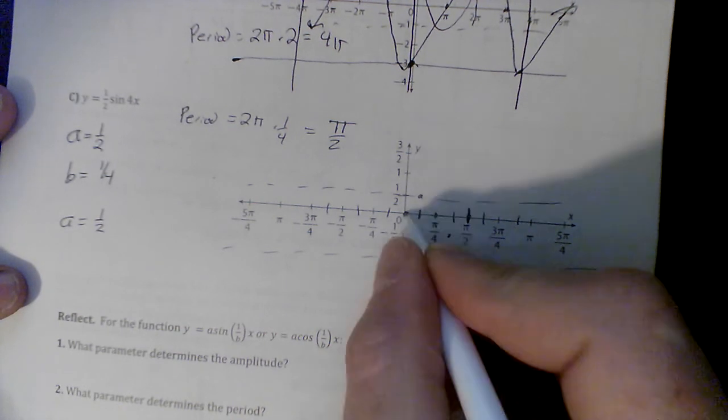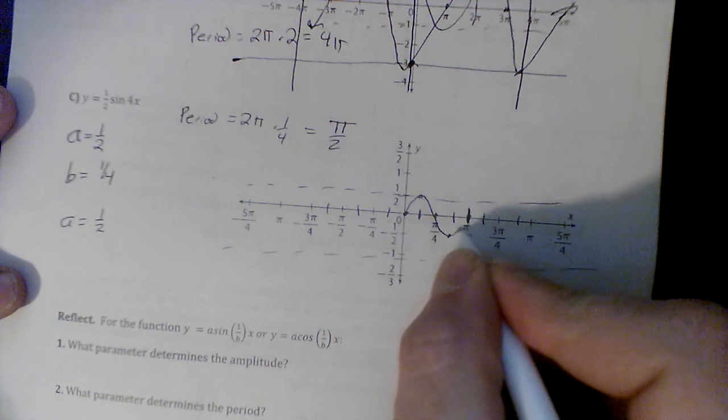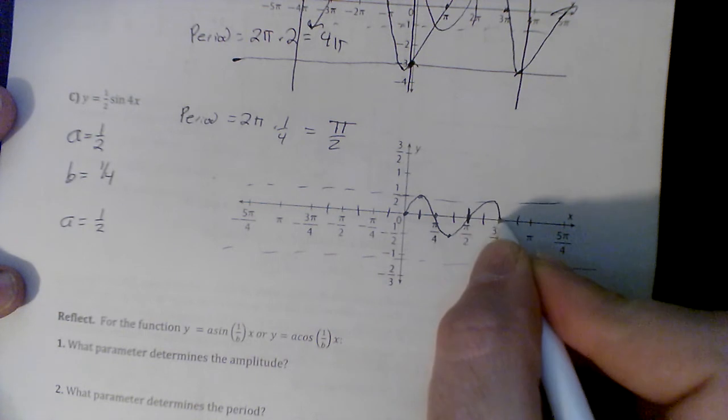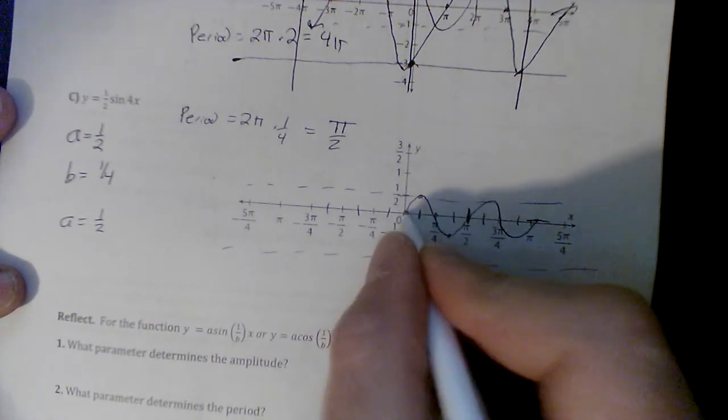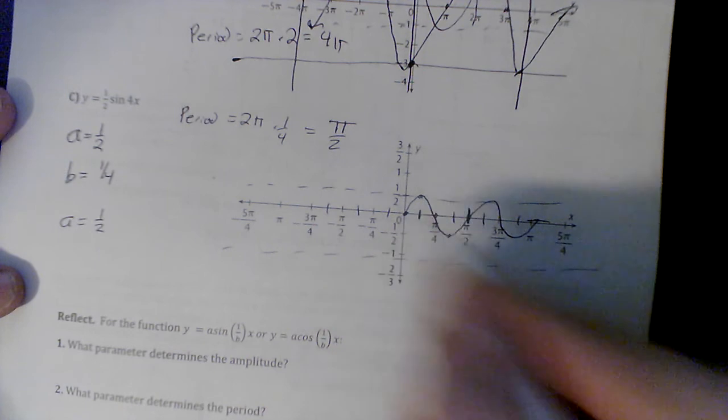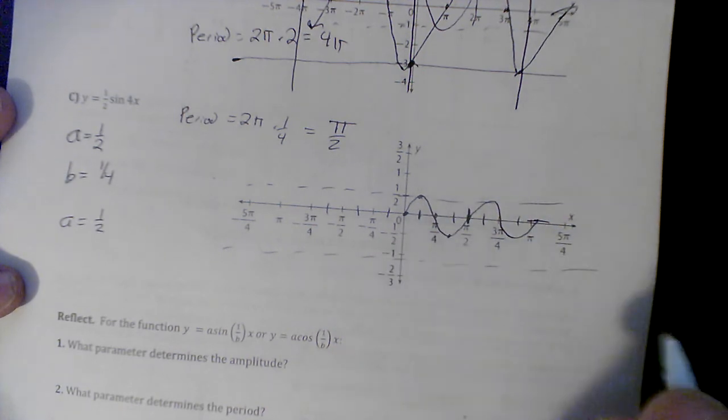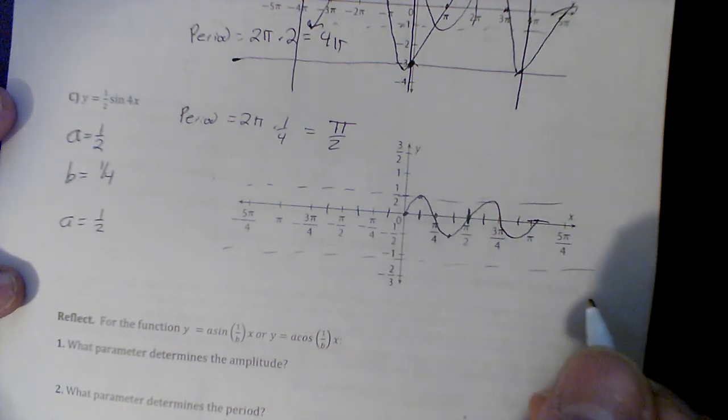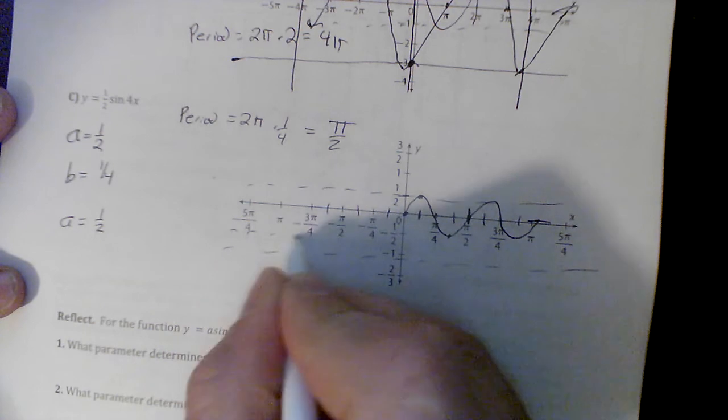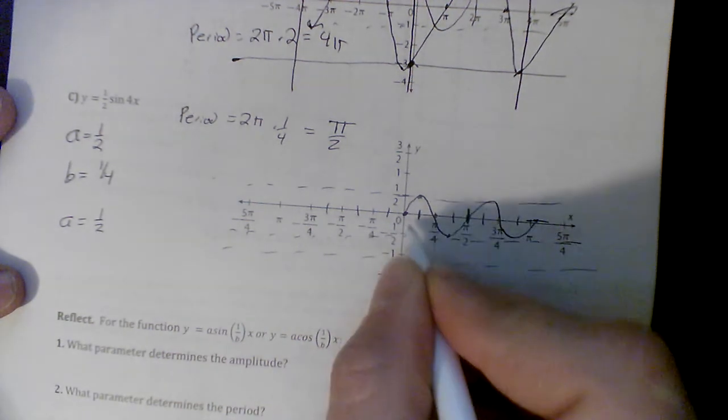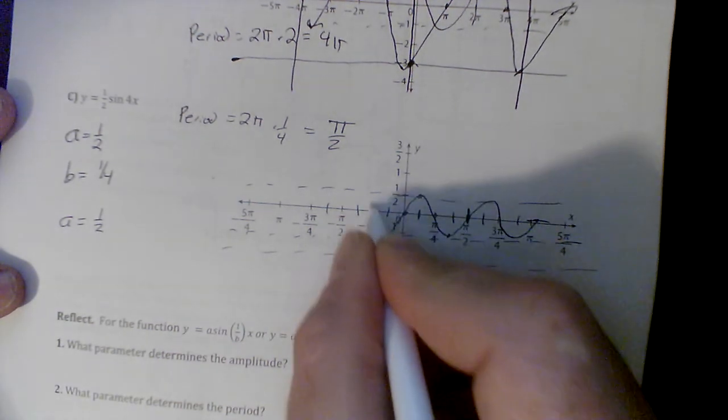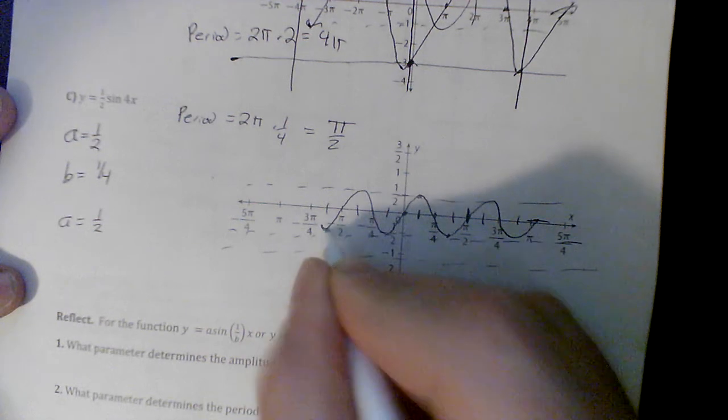The first period that we graph looks like that, and then it continues, and it continues in this direction as well. I did that right. I put that dot wrong - it's negative 1/2 here. I'm graphing it right though. There we go. There it is, and it could continue for the whole graph.